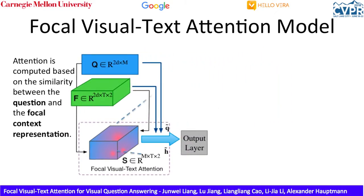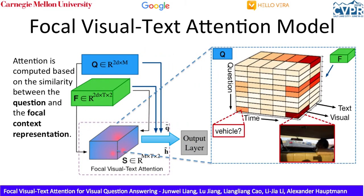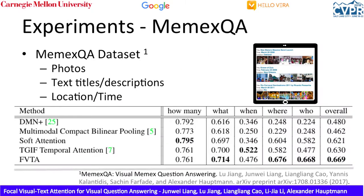Then, attention is computed based on the similarity between the question and the focal context representation. Both the Q and F tensors are attended using a co-attention mechanism and are input to the final layer. In this example, the word 'vehicle' in the question is correlated with the image containing a vehicle in the attended representation.